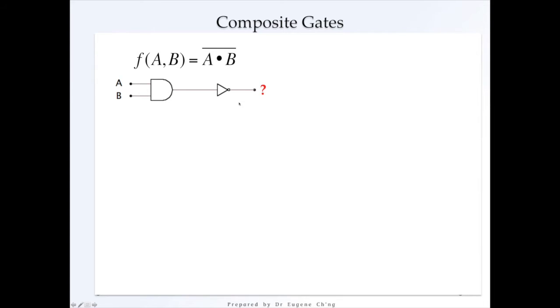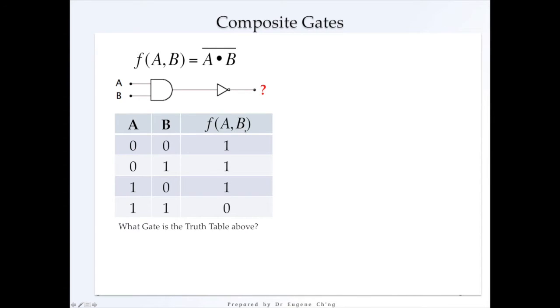So what does that give you? We're going to have a look. This is the behavior of this particular composite gate and we have a function here. What is the function? What gate is the truth table above?